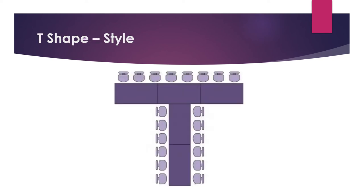Then we have the T-style setup, where rectangular tables are used for the head table. At the centre of the head table, one or more tables extend outward — the number depending on the required capacity. The chief guest or head people sit at the head table, while attendees sit in rows facing each other along the extending table.